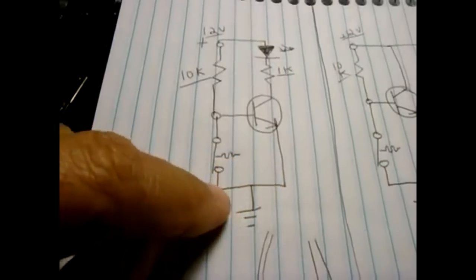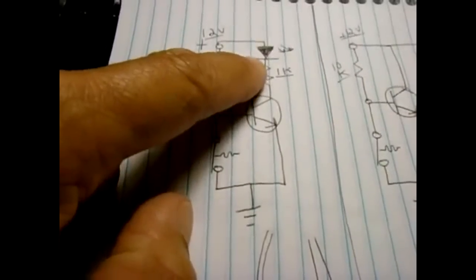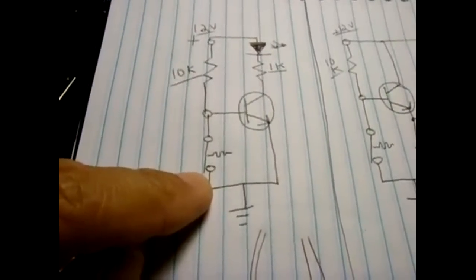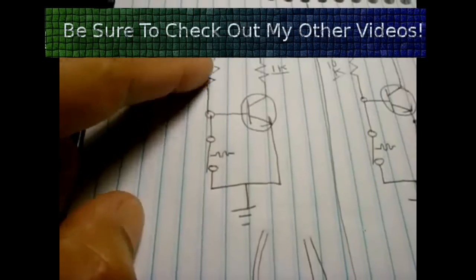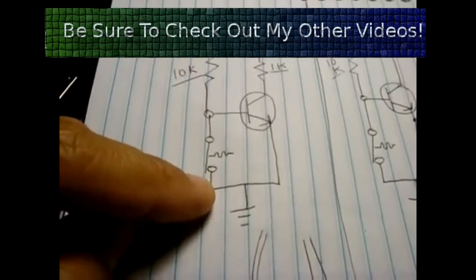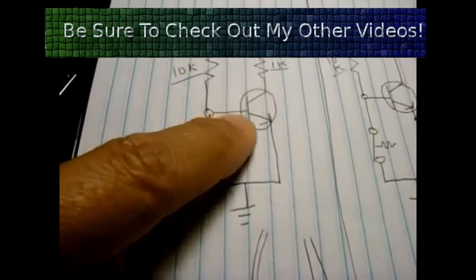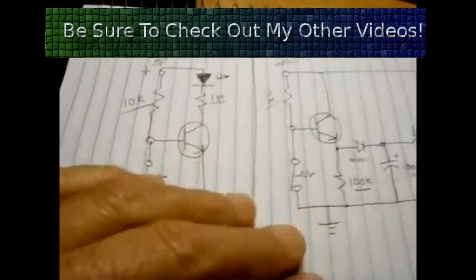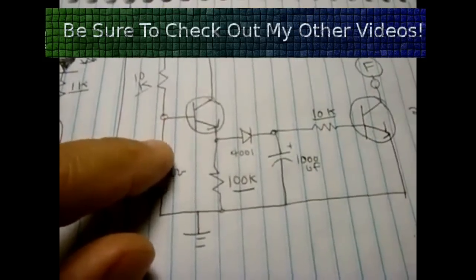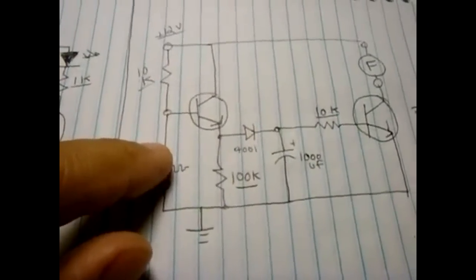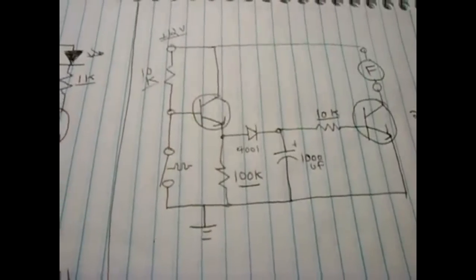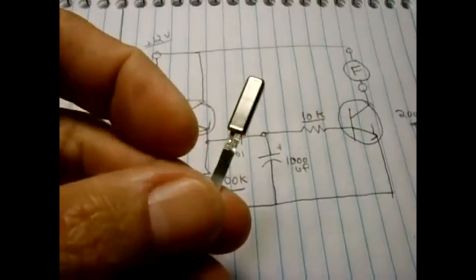As soon as this thermal switch reaches the point that it's designed to trip at, voltage will climb at the base of the transistor allowing the collector and emitter to let the current flow through and that will illuminate the LED. When it's cooled, the thermal switch voltage that comes in is shunted right to ground, so there's no voltage building up to turn the transistor on.